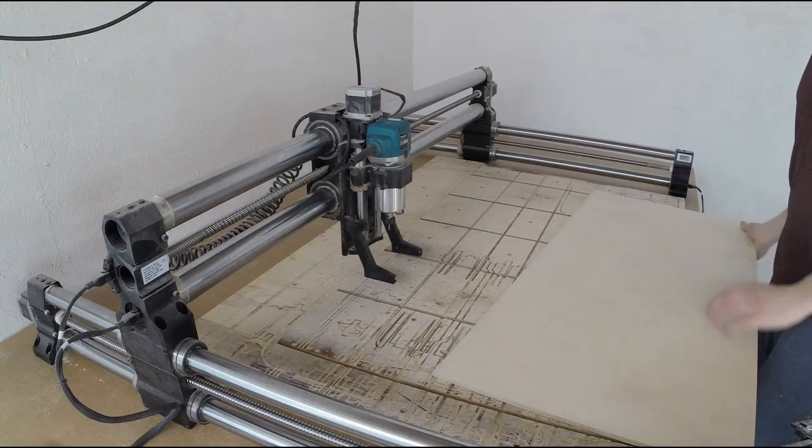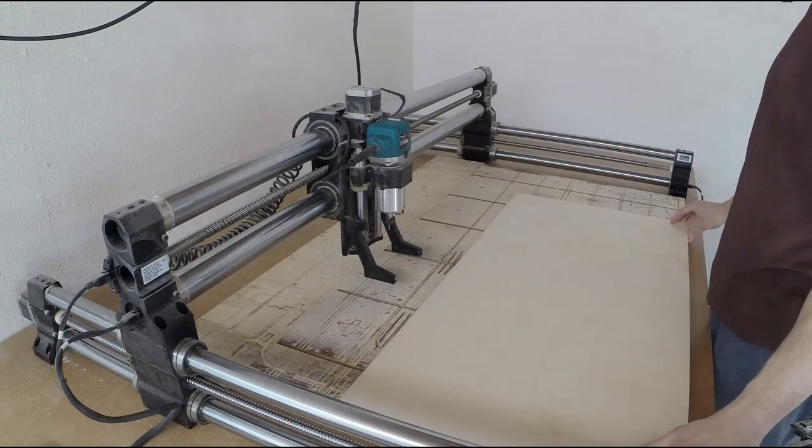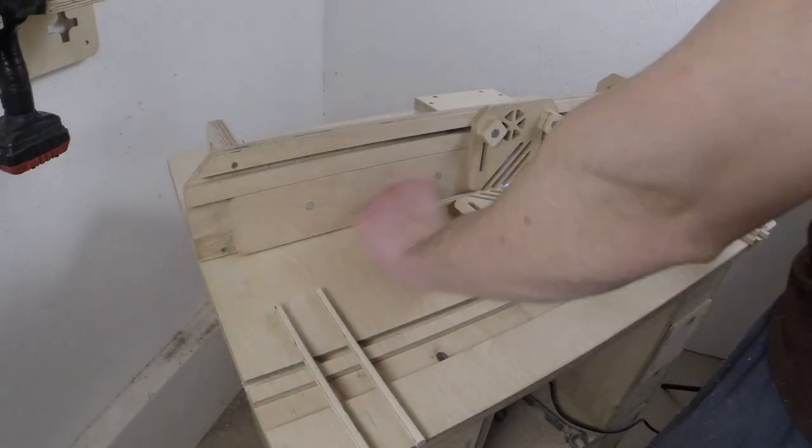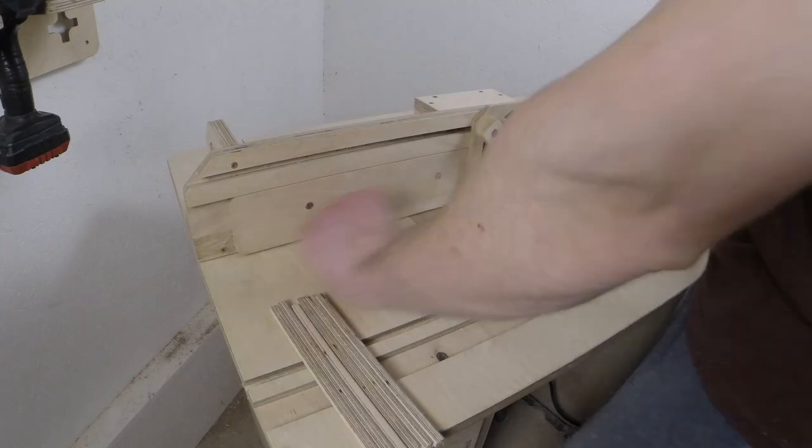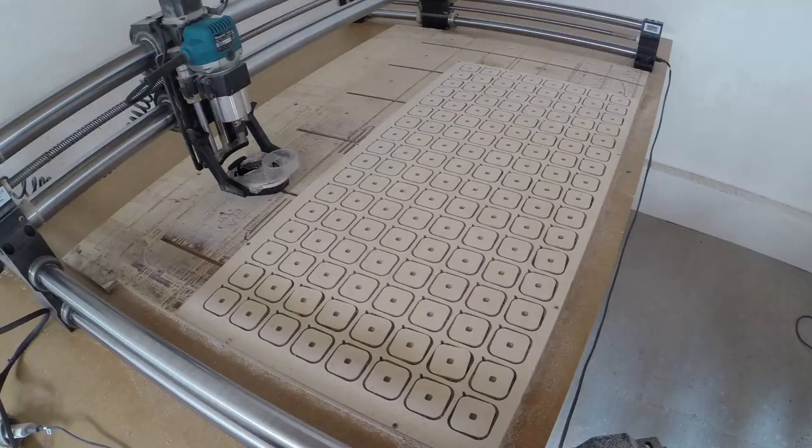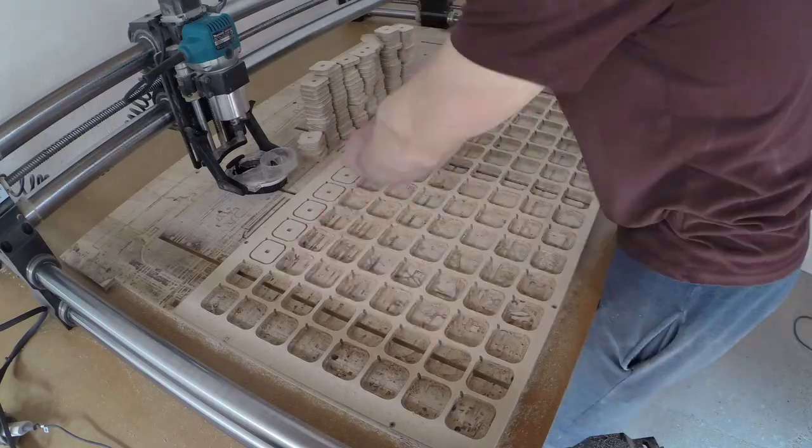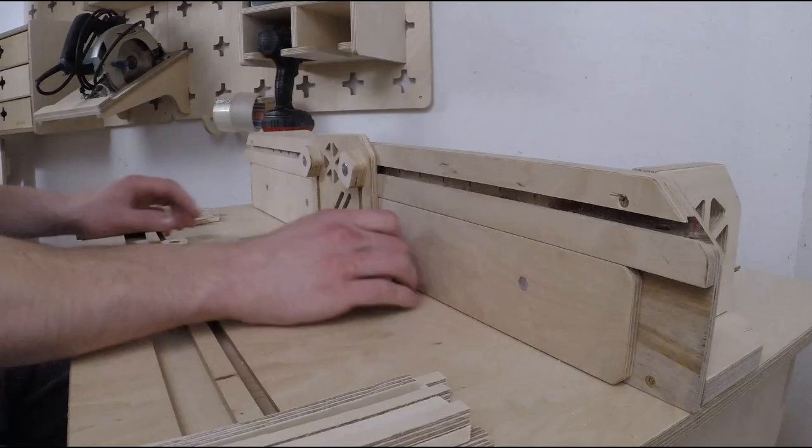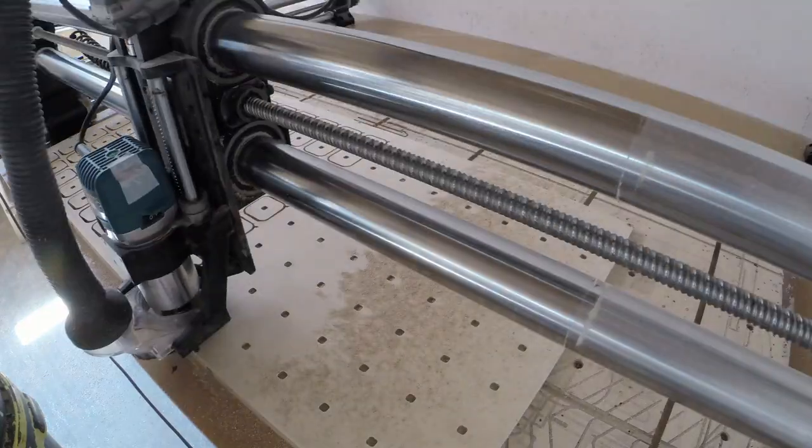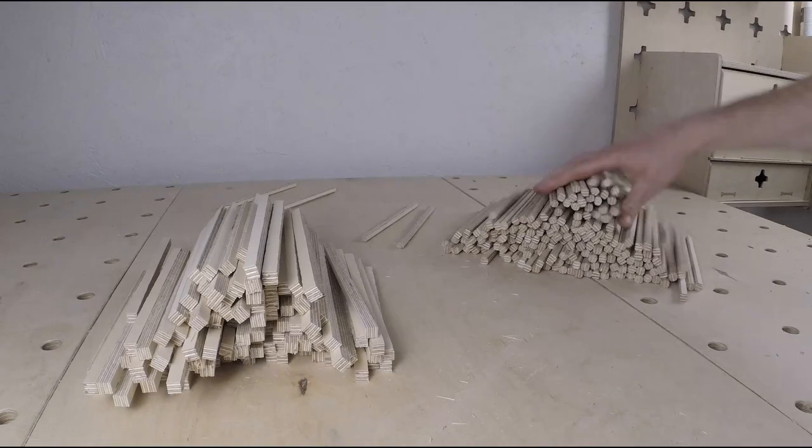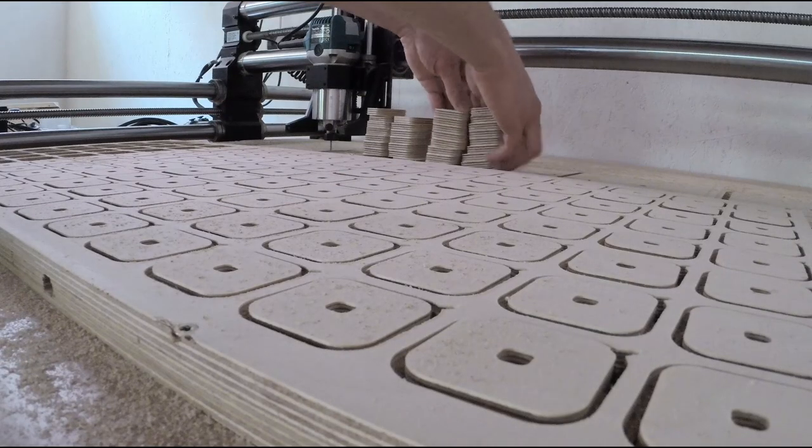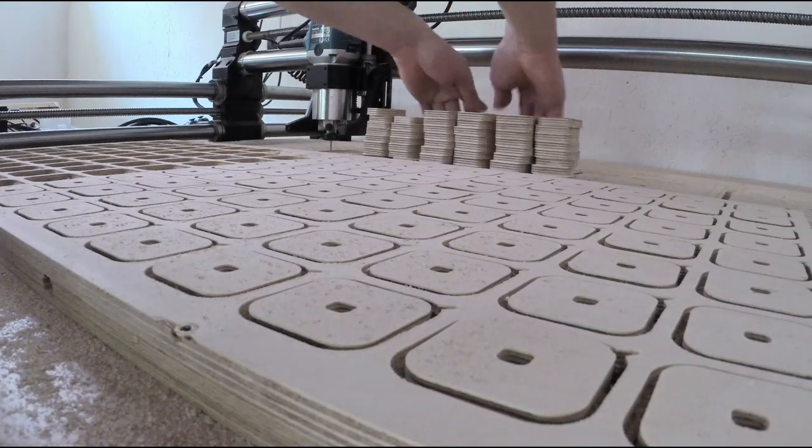So I loaded the next sheet on the CNC router and went back to trimming the edges of the pins. After sliding a couple of dozen pins through the router setup, the next set of tiles was ready. So I removed them from the CNC and attached the next sheet and went back to trimming the edges. I went back and forth from the router table to the CNC a couple of times.